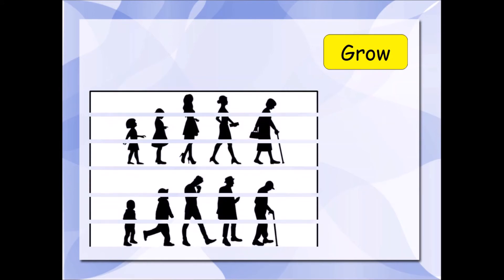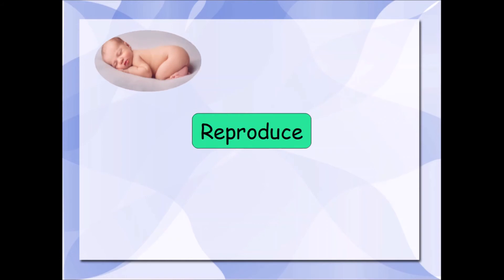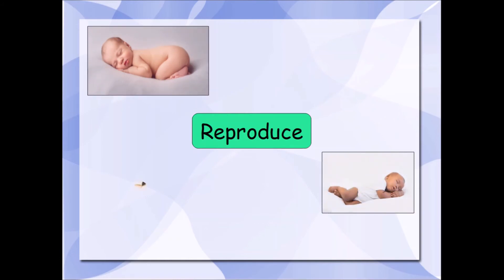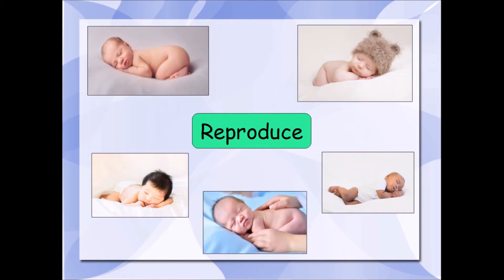The next one — grow. We grow. Living things grow. Humans grow. We are born as babies, and we grow. We become children, and then grown-ups. We grow. Next — reproduce. We, as humans, have babies. We have new humans. So, living things are going to have new living things. That's the idea. Reproduction. So, we reproduce.